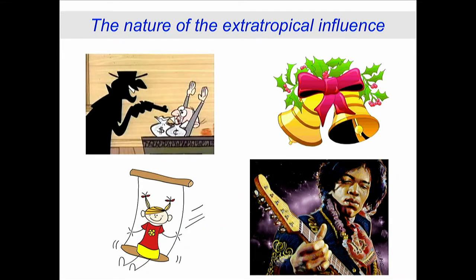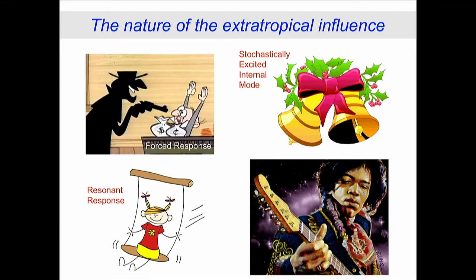So what is our hypothesis? Which picture best represents the influence of the extratropics on the tropics? Top left is a forced response — do the extratropics basically control what happens in the tropics? Or is it more like a stochastically excited internal mode? These bells ring in a certain way — it doesn't really matter how you shake them, they're going to ring the same way. Or is it the girl on the swing? That's a resonant response. She needs to be pushed in a certain way, and if you don't push her right, she's not going to swing.